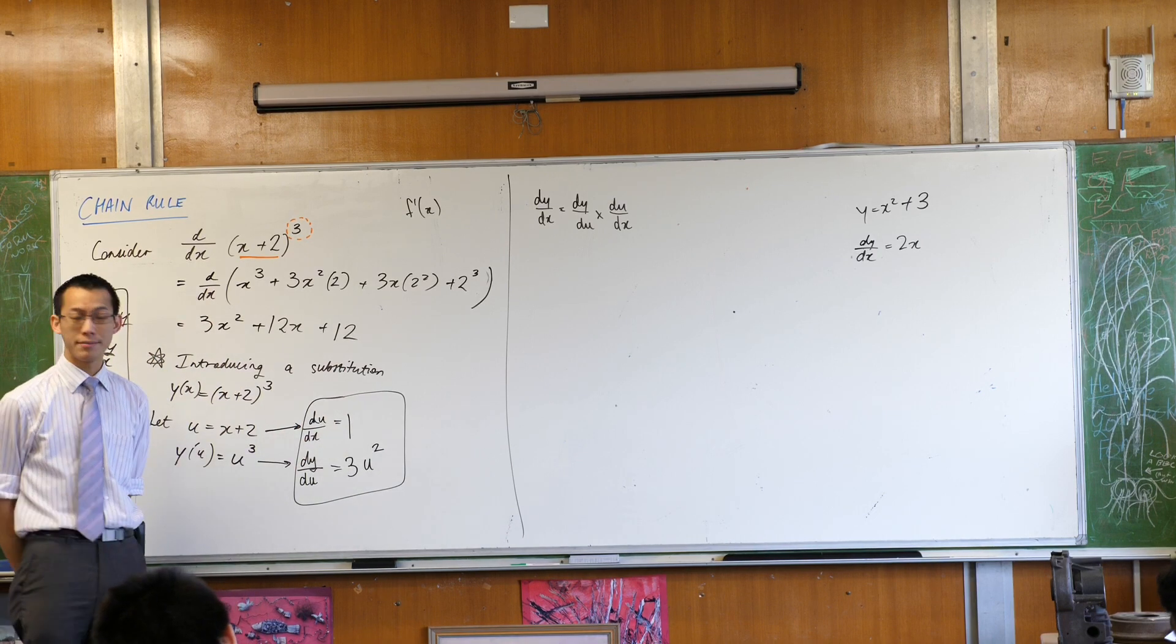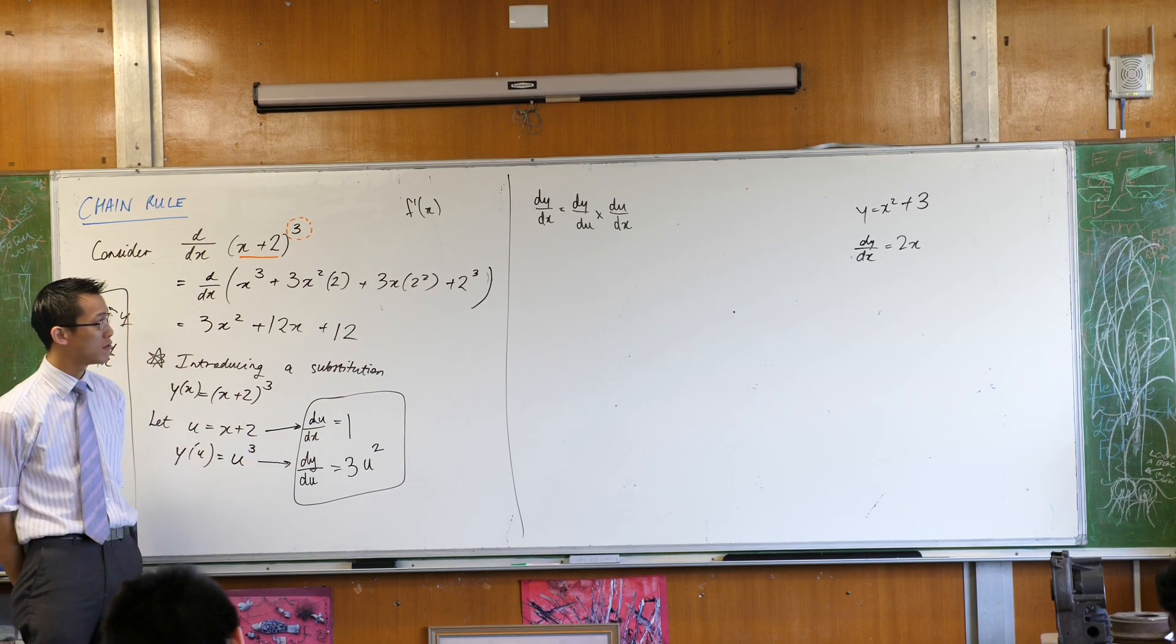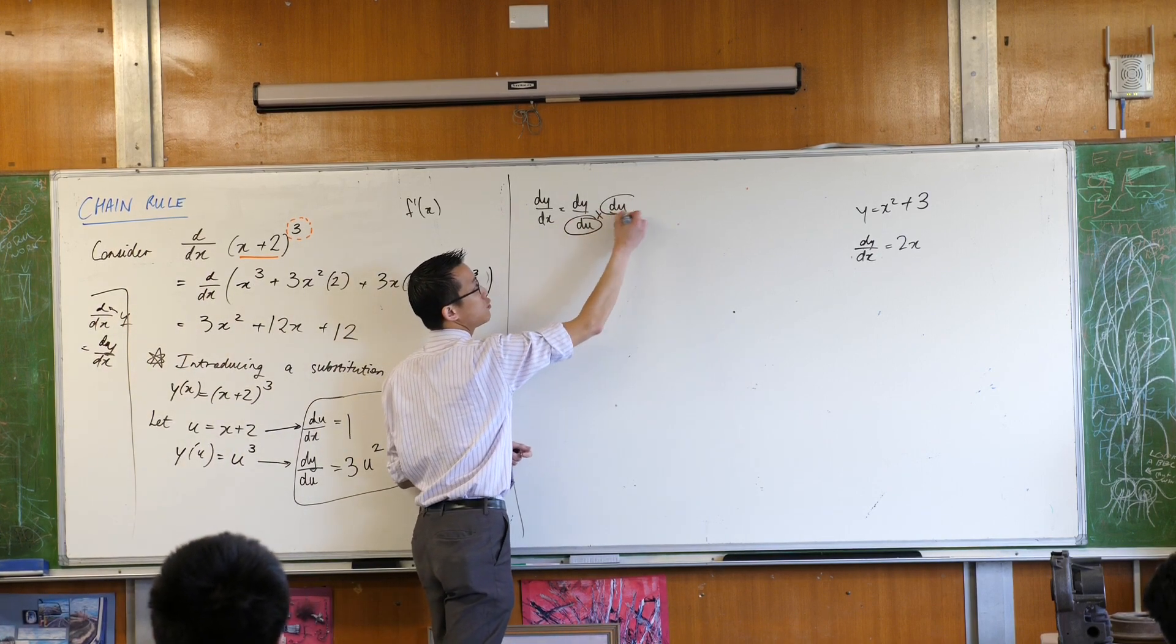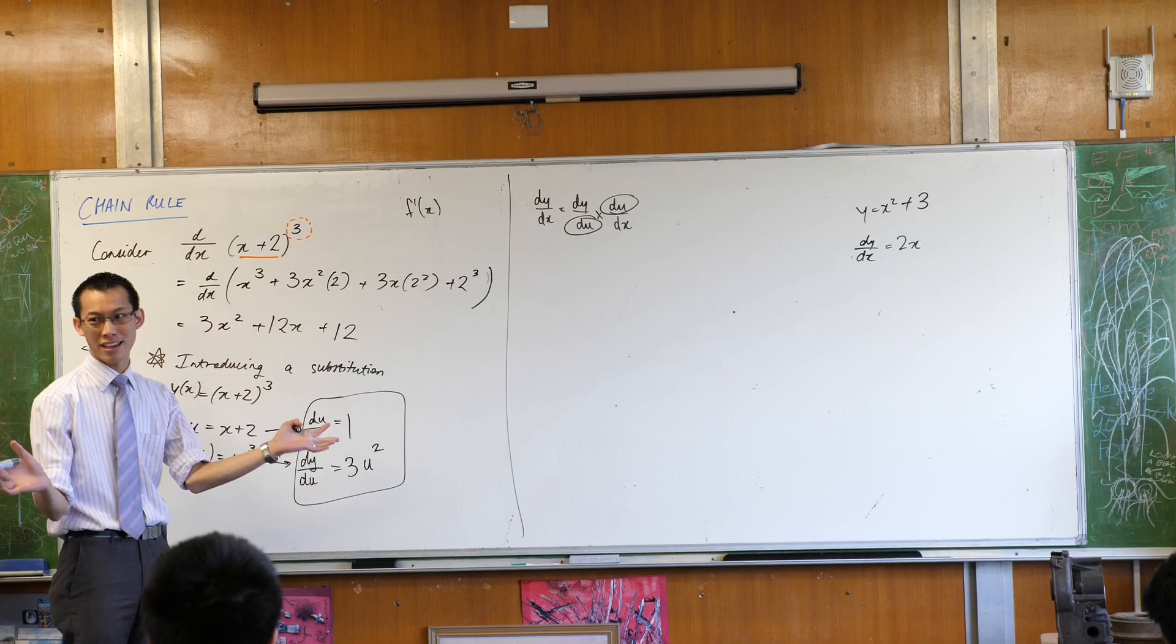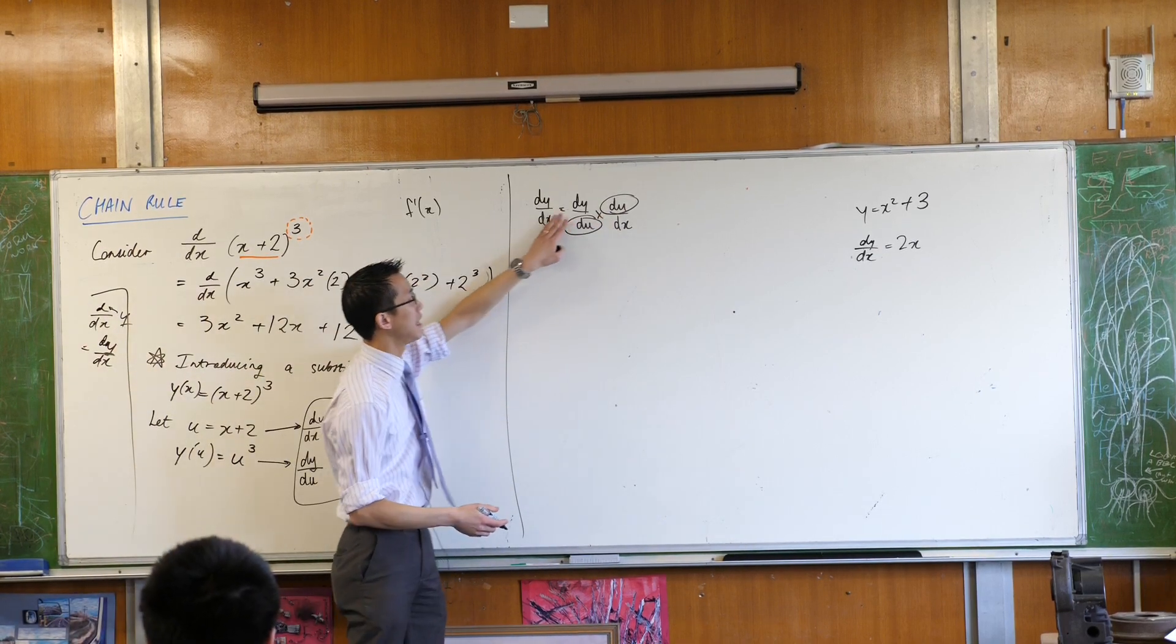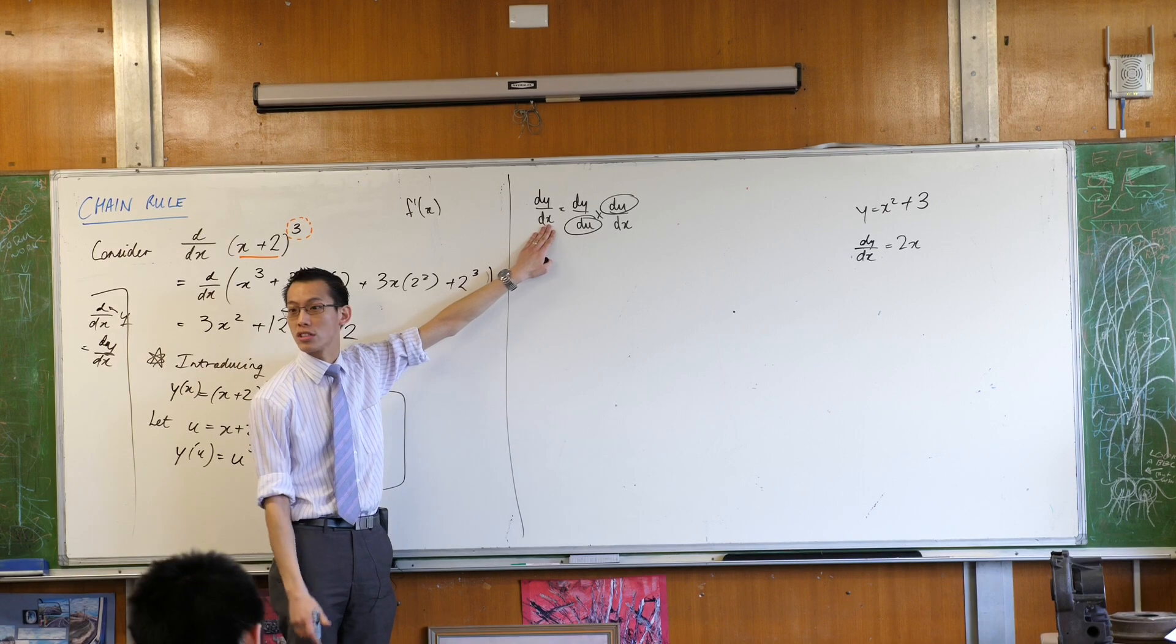Dy is a little change in y, du is a little change in u, and dx is a little change in x. If it's the same little change, then just like anything else in fractions, you can cancel them. These are going to cancel and leave you with the derivative that you actually want.